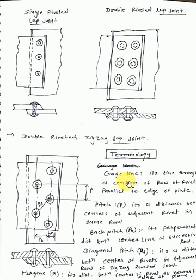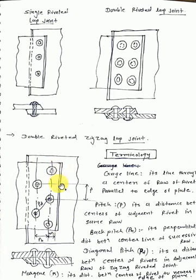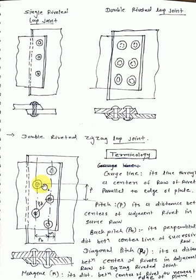Now let's look at the terminology. First is the gauge line — it is the center line passing through the center of the row of rivets, parallel to the edge of the plate. Next is pitch: it is the distance between the centers of adjacent rivets in the same row.